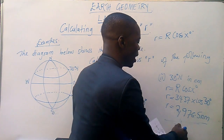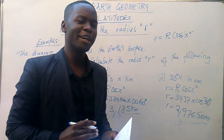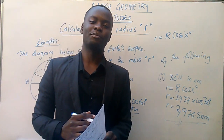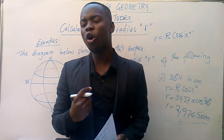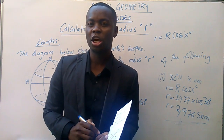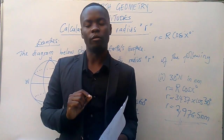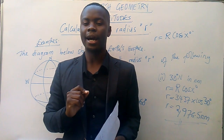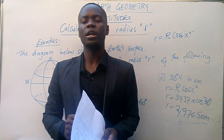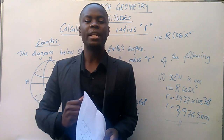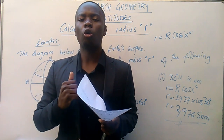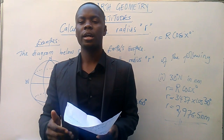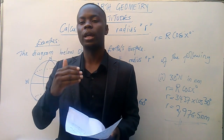So, this is our answer. A very simple way of knowing the value of r, provided you know the formula to use when you want to calculate the value of r, which is r equals capital R cos x degrees. Thank you for watching this video. In the next video, I'm going to show you how we can calculate the distance of a latitude.